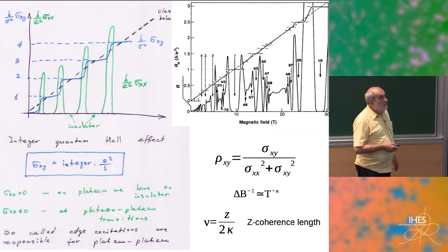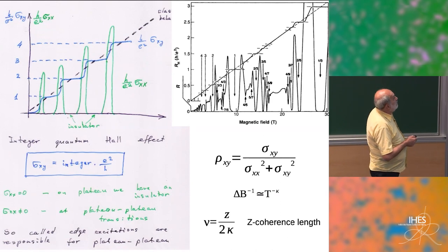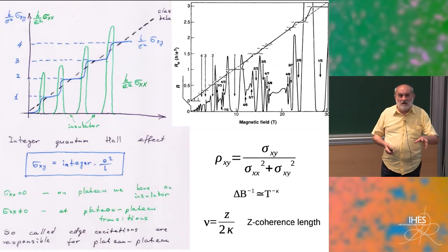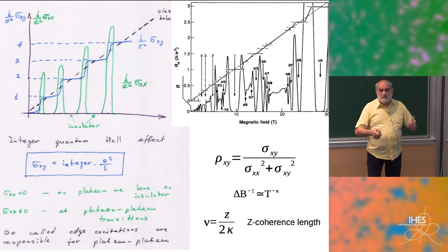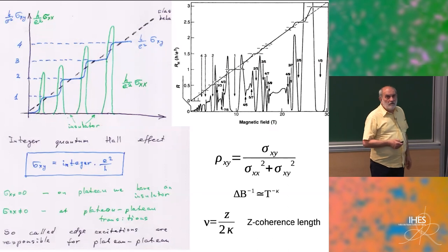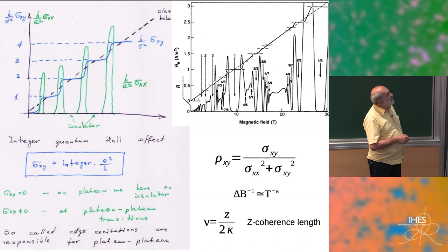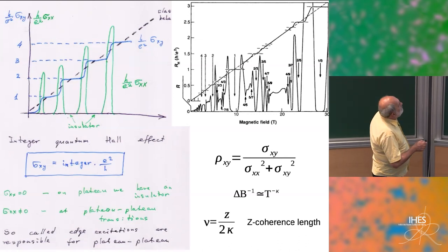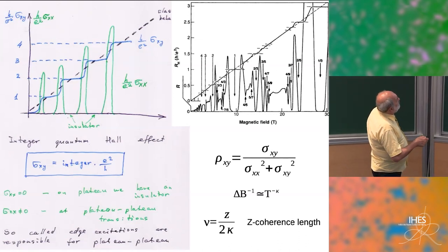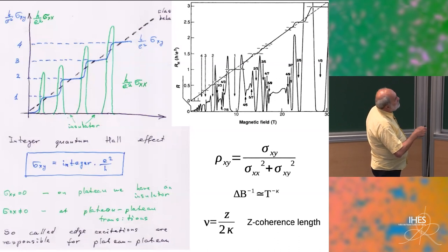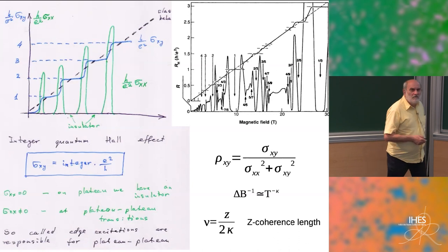On the transition between plateaus, the system becomes delocalized and current can appear. At the transition there's a second-order phase transition. The question is how to formulate this transition, what theory it is, and how to calculate the critical exponents.